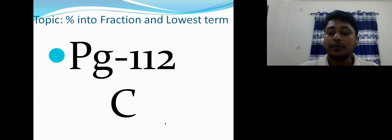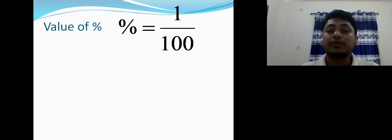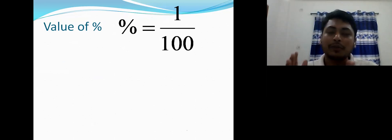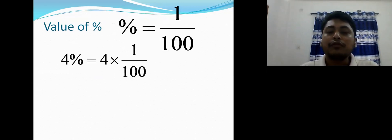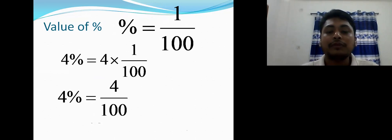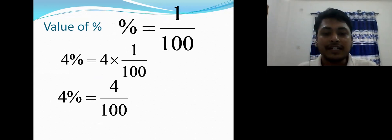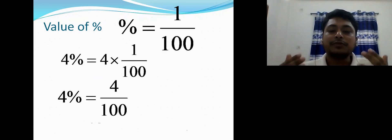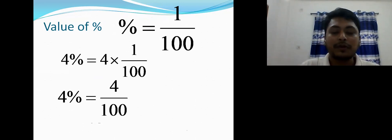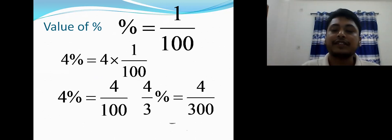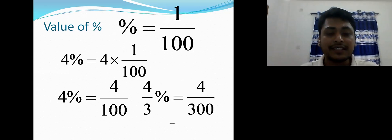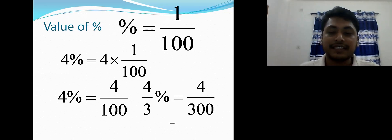For percentage to fraction: the value of percentage equals 1/100 — meaning divide by 100. So 4 percent means 4 × (1/100) = 4/100. Similarly, 4/3 percent equals 4/300 — because the denominator 3 gets multiplied by 100. So 5/6 percent means 5/600, and 2/5 percent means 2/500.